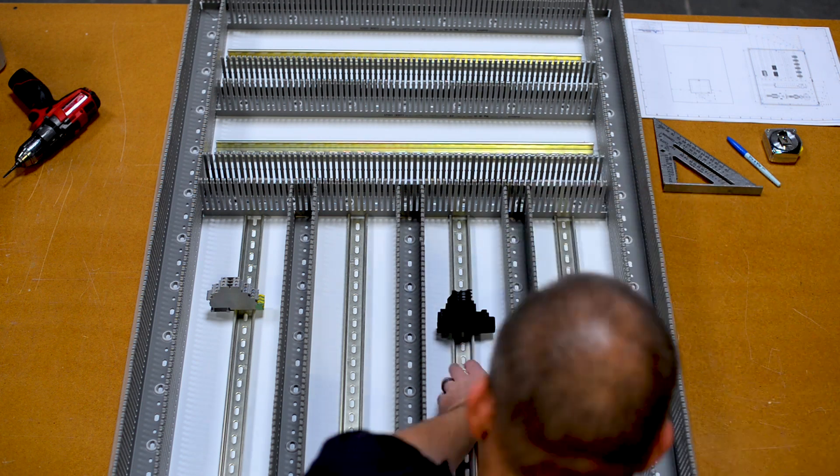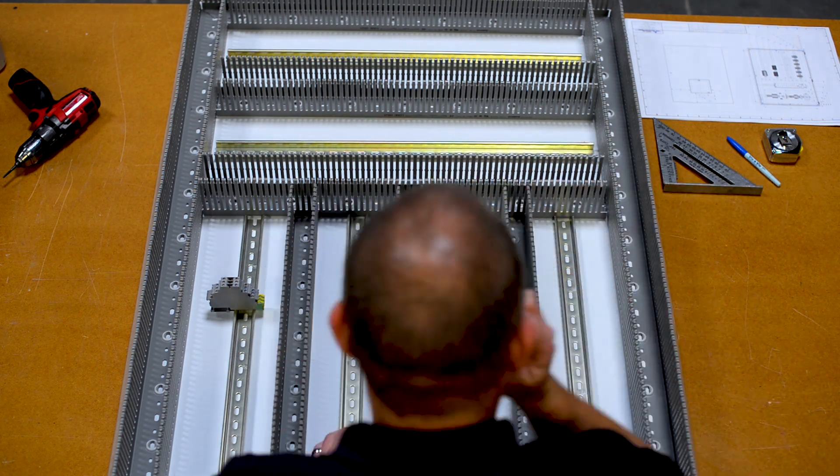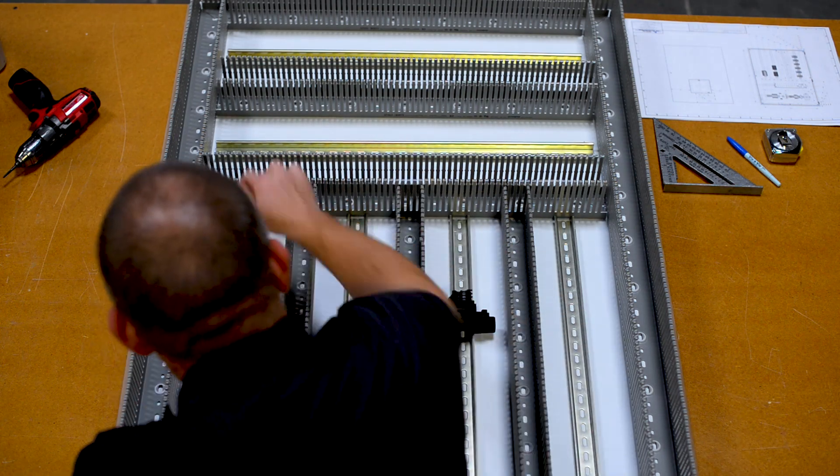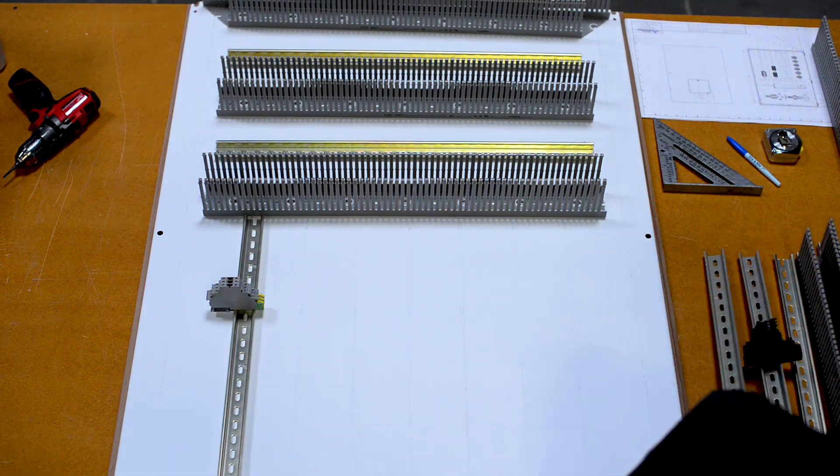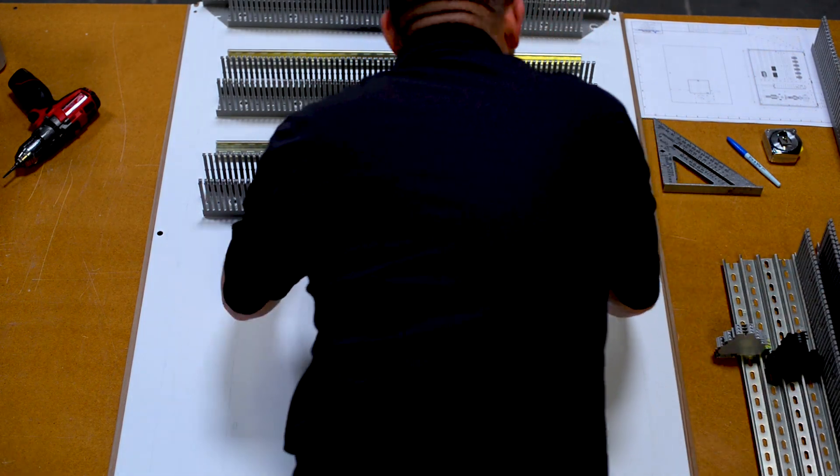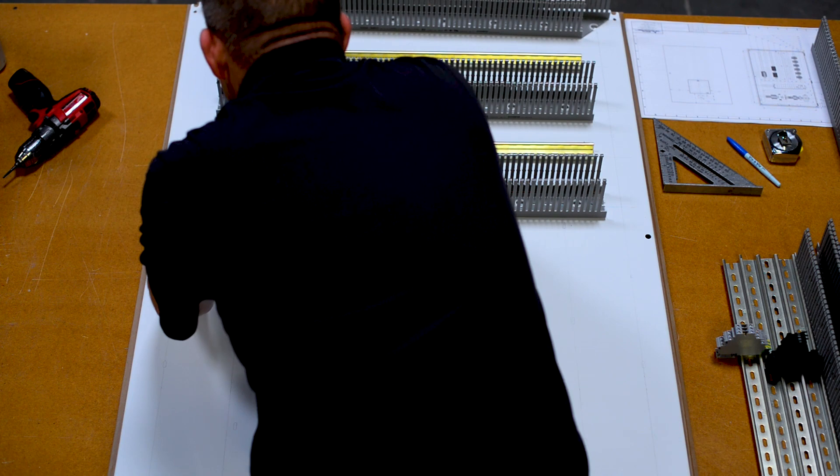Once the hole locations have been marked, you can remove the hardware from the panel to begin the drilling process. While removing the hardware, remember where each piece goes and its specific orientation.